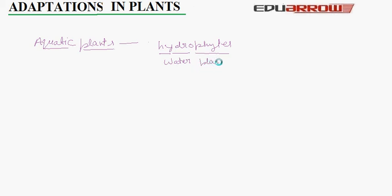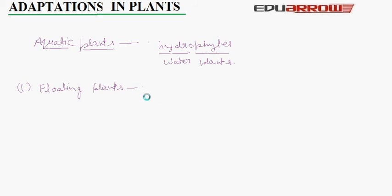The first group is floating plants. These plants float in water because they have either spongy or air-filled stems and leaves. These plants have thin, broad leaves with stomata on the upper side. These plants are very light and their stems are reduced. Examples of floating plants include duckweed and water lilies.